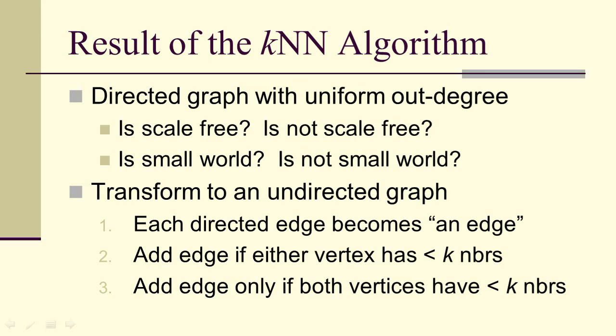Option two is often called the OR option—if the first vertex has degree less than K or the second has degree less than K. The third option is often called the AND option. Its edge is only added if both vertices have fewer than K neighbors.